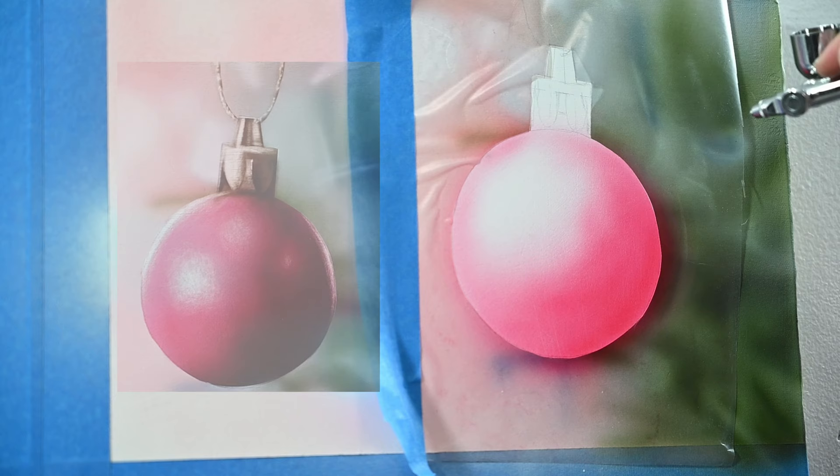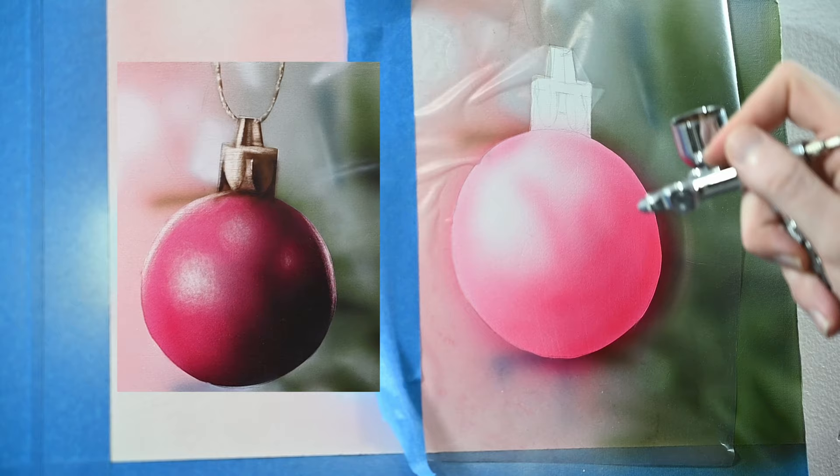As you can see in the reference here, the darkest area is going to be on the right side, so we're going to spray some more paint there. And then as it moves along to the left, that's where the light's hitting it, so we're going to have some brighter highlights.